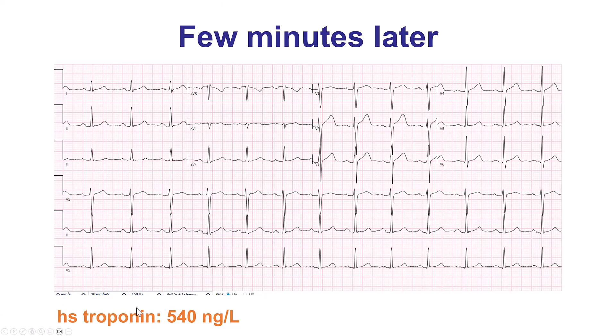However, his troponin was elevated at 540 nanograms per liter. One could make an argument to take him directly to the cath lab, but given the lack of chest pain and the resolution of the ST-segment elevation, he was sent for a coronary CT angiogram.